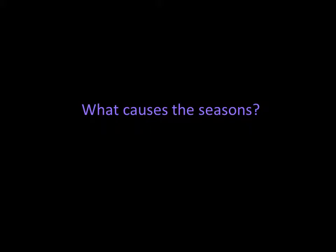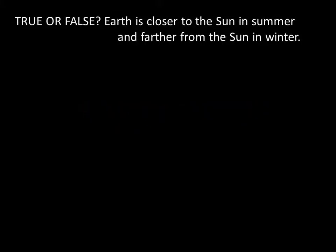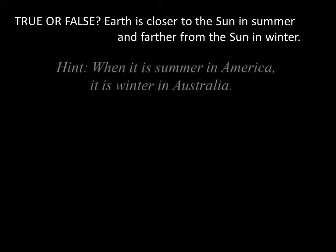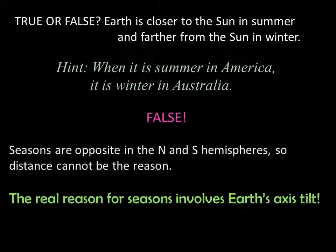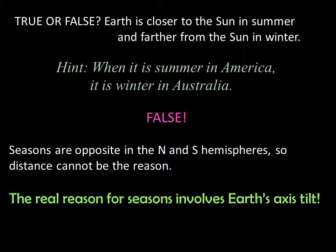Now, let's talk about why we experience seasons. True or false: Earth is closer to the sun in summer and farther from the sun in winter. Here's a hint — when it's summer in America, it's winter in Australia. You probably guessed false. Seasons are opposite in the northern and southern hemispheres, so distance cannot be the reason. In fact, we're slightly closer to the sun when it's winter in the northern hemisphere than when it's summertime.